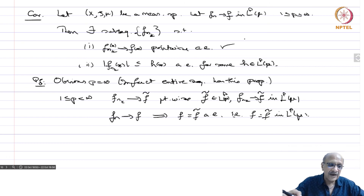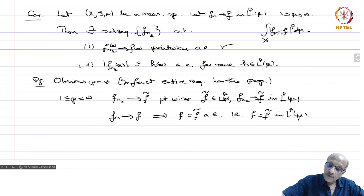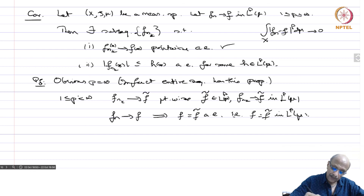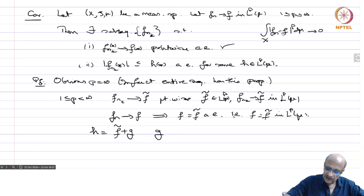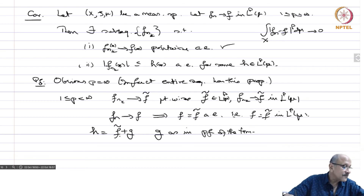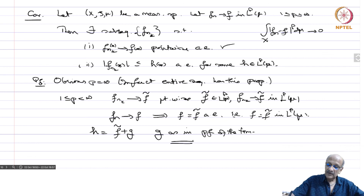For the second part, take h = |f̃| + g, where g is the function from the infinite series defined in the proof of the theorem. Then h ∈ Lp, and by the triangle inequality |f_{n_k}| ≤ h almost everywhere. This is a very useful property for studying convergence in Lp spaces. We now know Lp is a Banach space; next we will examine the duals of the Lp spaces, when they are separable, when they are reflexive, and other properties.